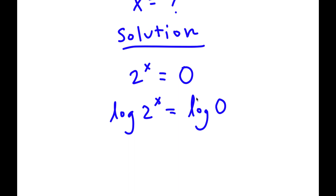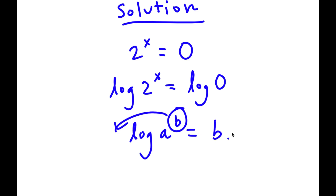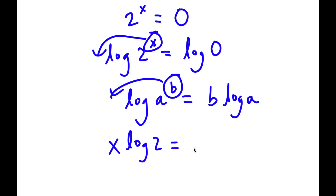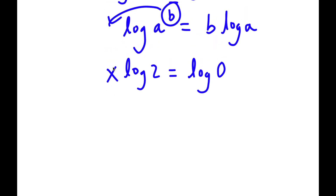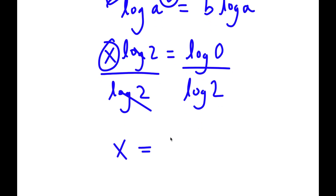If I have something in the form log a to the power of b, I can move the exponent b to the front, so this equals b times log a. So in this case, log of 2 to the power of x becomes x times log 2, which is equal to log 0. I want to isolate x, so I divide both sides by log 2. Those cancel out, and now I have x is equal to log 0 over log 2.